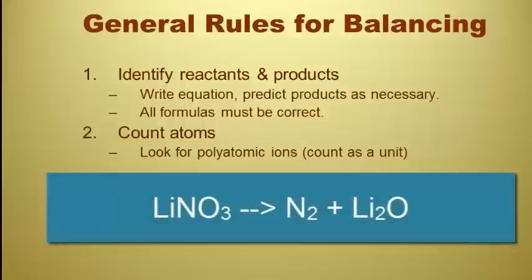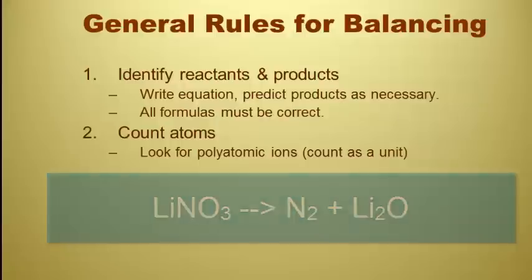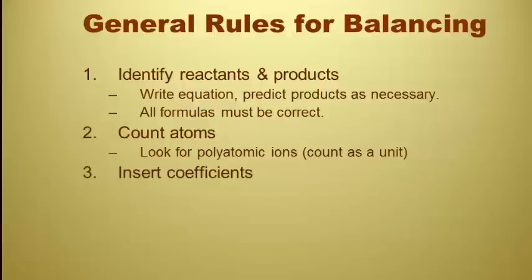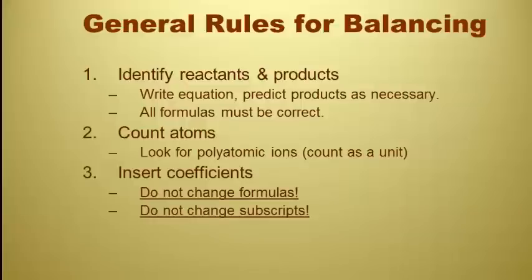However, if I see nitrate on a reactant side and I don't see nitrate on the reactant side, it's separated into nitrogen and oxygen, then I'll need to count nitrogen and oxygen separately. Make sure to insert coefficients as needed. Remember, you're not allowed to change the formulas, so you cannot change the subscripts. And you're going to balance one atom or one polyatomic ion at a time.